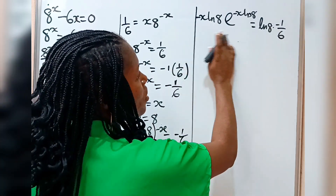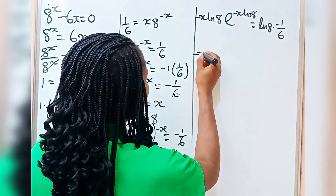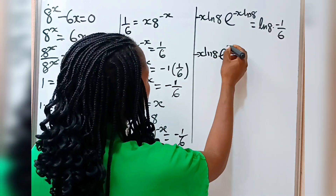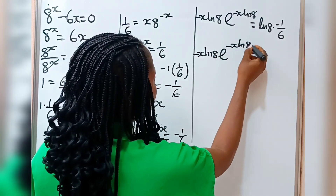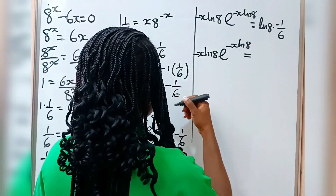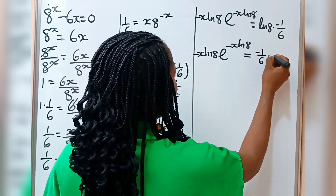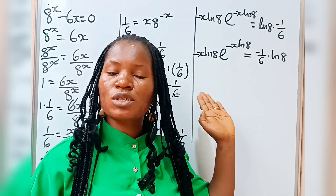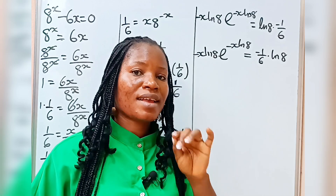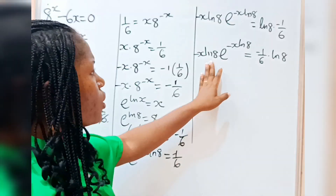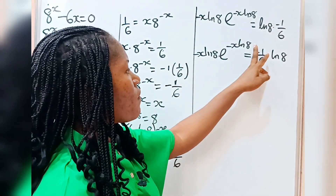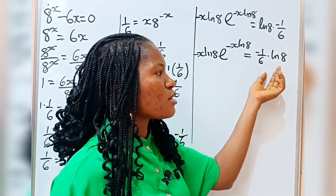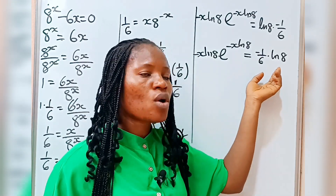Let me repeat what I wrote here. What I wrote here is minus x ln x times e to the power of minus x ln x is equal to minus 1 over 6 multiplied by ln x. Notice that what we have here is also what we have as the power, so this side is already in order. I need to put this side in order as well.